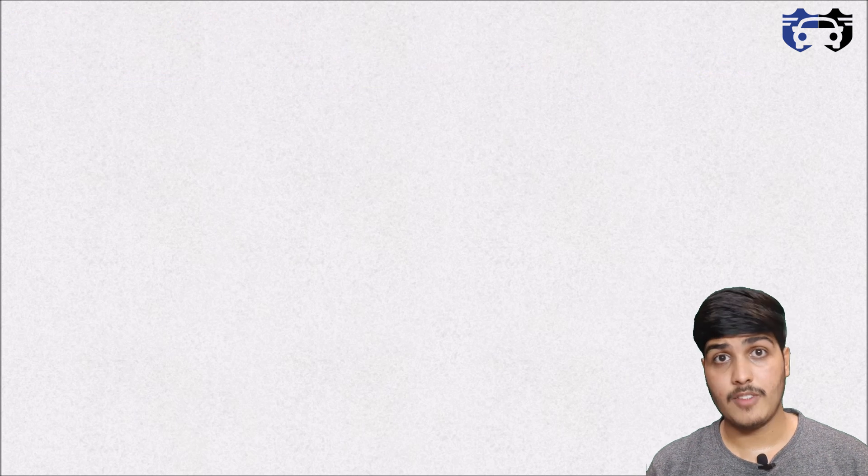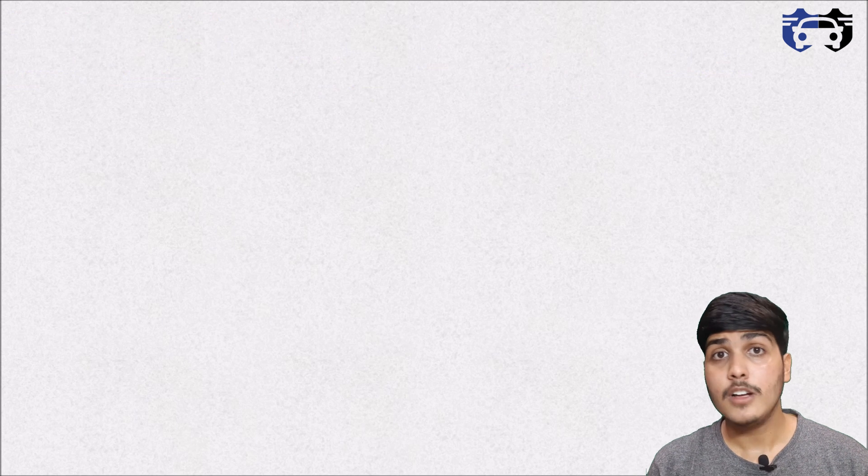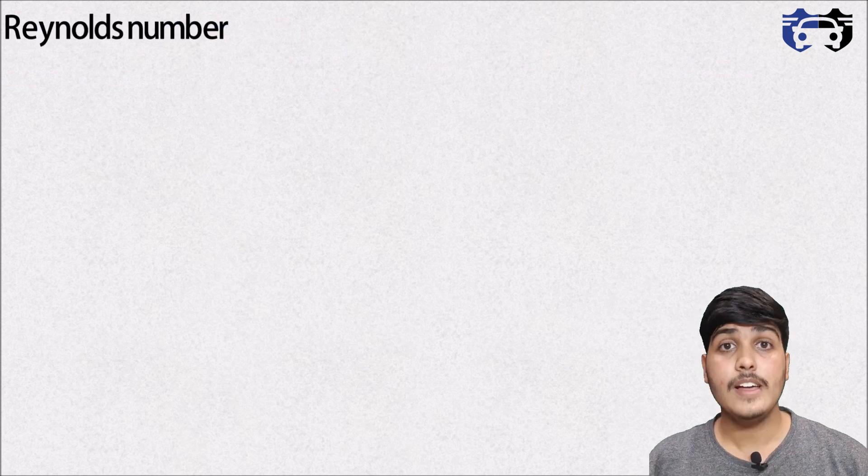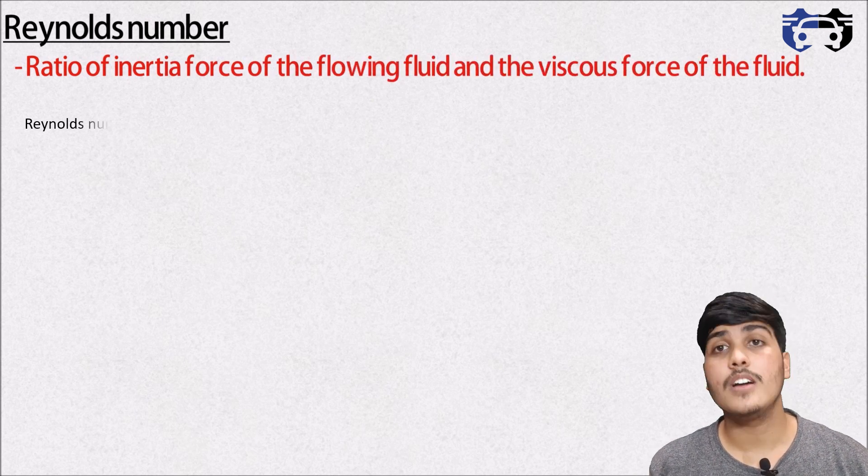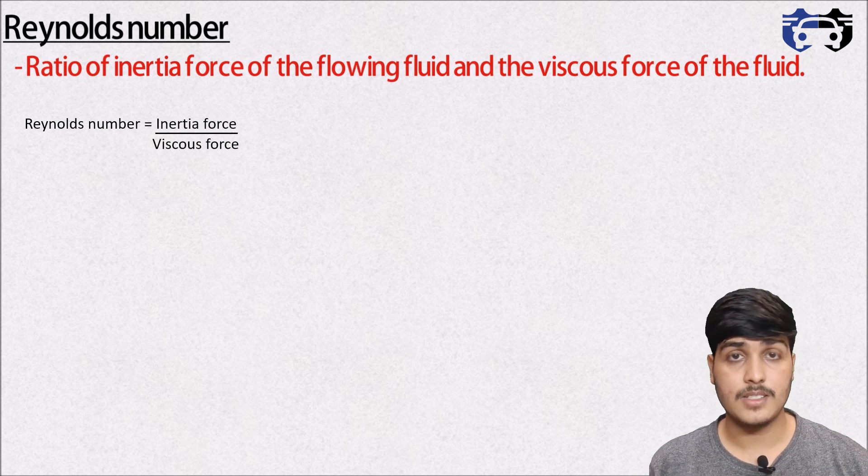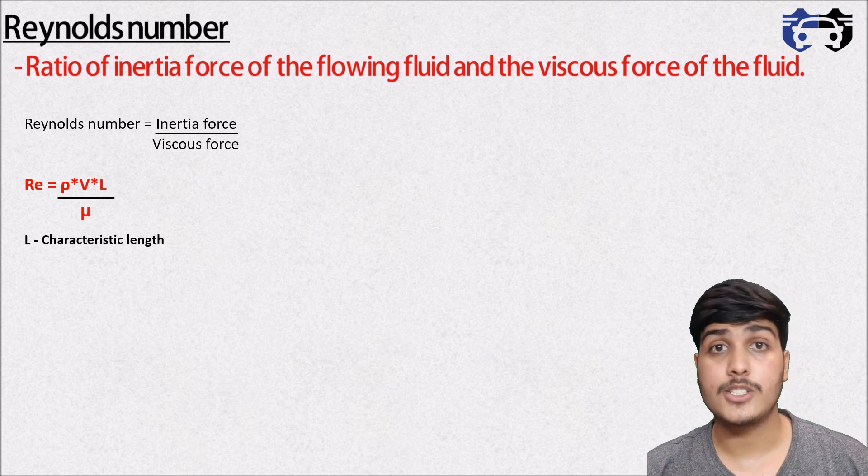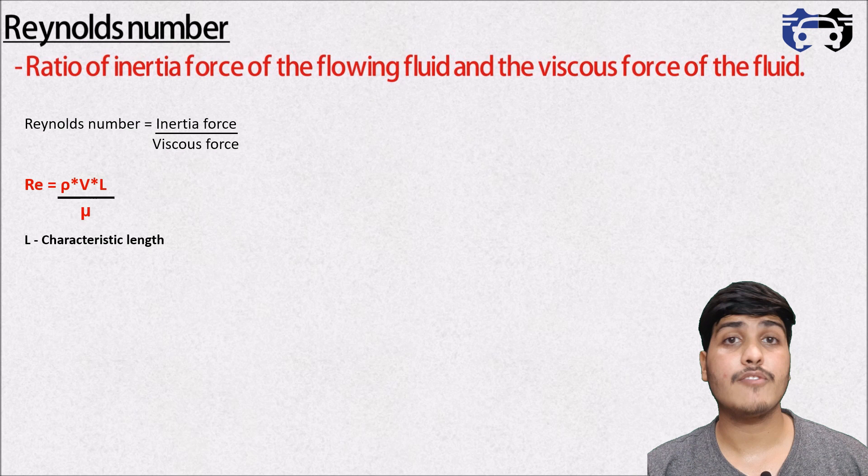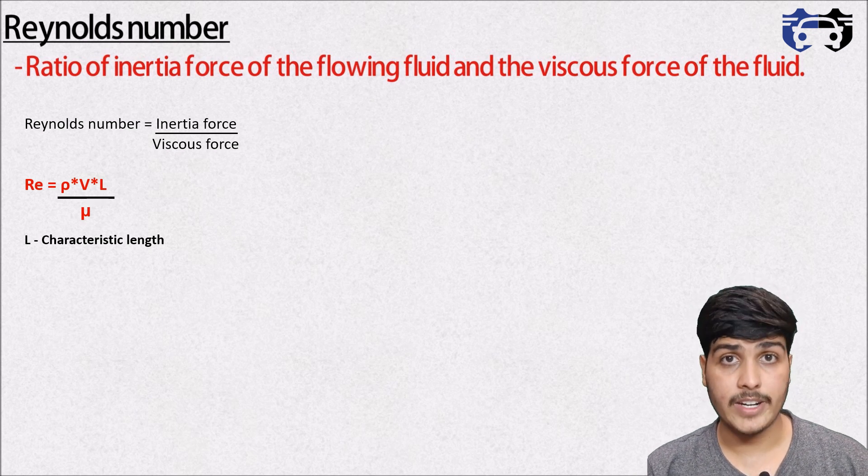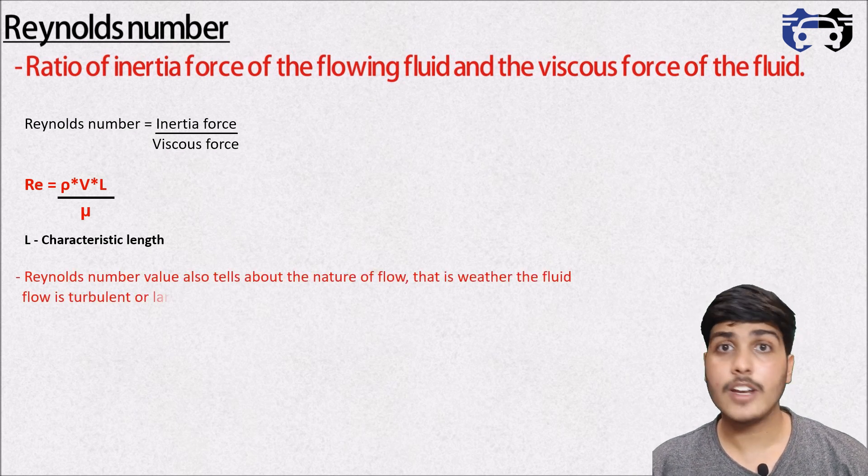Now for testing a car or any other object in wind tunnel, generally small scale models are used. For comparing the results of small scale model with the full scale model, some dimensionless numbers are used. One of the most important number used for comparison is called the Reynolds number. It is defined as the ratio of inertia force of flowing fluid and the viscous force of fluid. So Reynolds number equals to inertia force divided by viscous force. This will give Reynolds number Re = ρVL/μ. Where L is the characteristic length which can be taken equals to the length of the car or if the car is having wing, it can be taken equals to the chord length or we can find the local value of Reynolds number by taking a local point distance with the leading edge of the body. Reynolds number also tells about the nature of flow that is whether the fluid flow is turbulent or laminar.